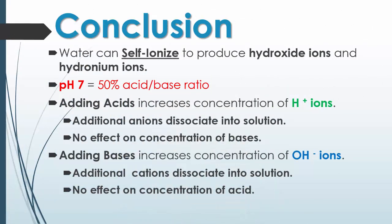So in conclusion, water can self-ionize, which produces your hydroxide ions and your hydronium ions. A pH of 7 indicates that you have a 50% acid to base ratio. If you add any acid, it increases the concentration of hydrogen ions, but it has no effect on the concentration of the base. And if you add more bases, you're obviously going to get more hydroxide ions, but again this will have no effect on the concentration of your acids. Hope you guys enjoyed this video, and if you have any questions, please come and see me.